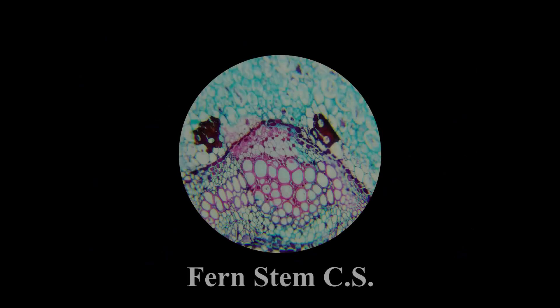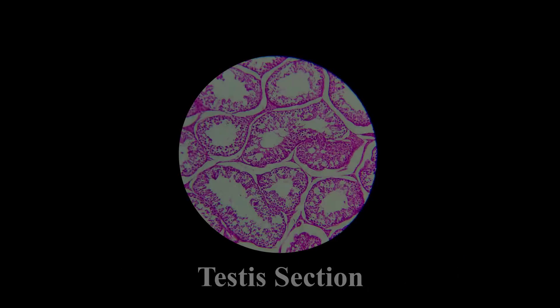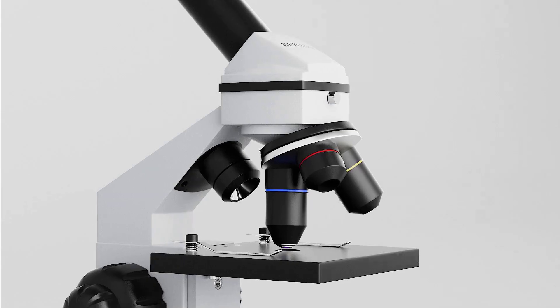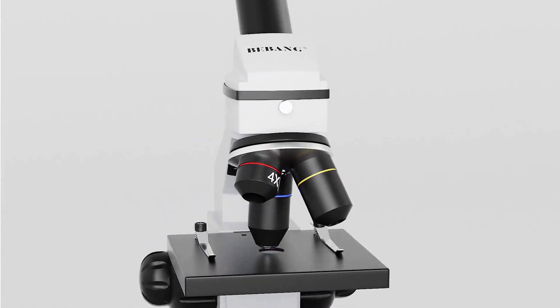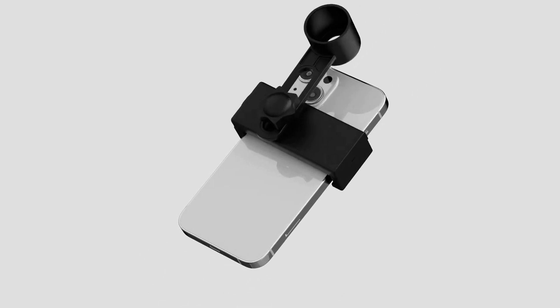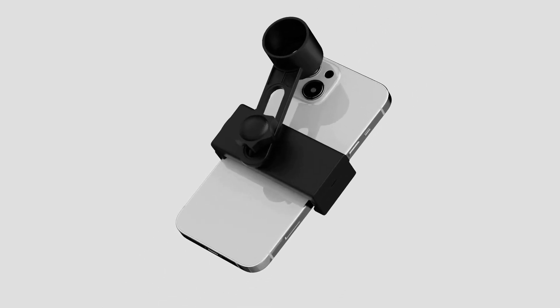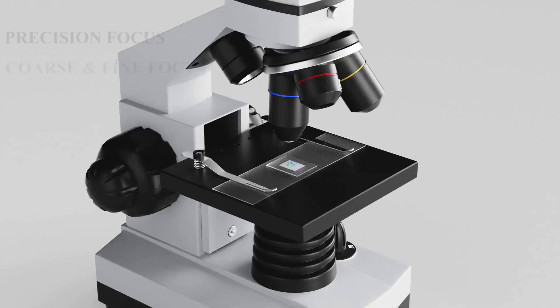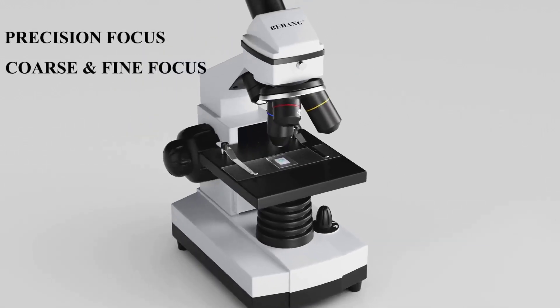Dual focusing knobs make achieving sharp focus effortless and precise. The dual LED illumination system, with lights above and below the specimen, is a standout feature, providing excellent clarity for various samples like plant cells and small electronics. While the image can get slightly fuzzy at the maximum 2000X magnification, the lower magnifications are perfectly adequate for most applications.